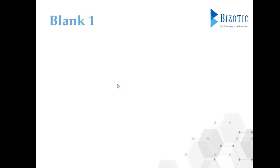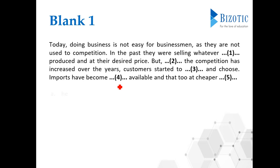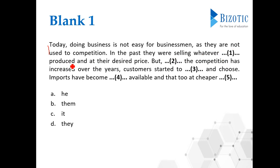Let's see the options available for the first blank. Let's read these two lines again to understand which option will directly fit into the first blank. 'Today doing business is not easy for businessmen as they are not used to competition. In the past they were selling whatever dash produced.' The options are: he, then, it, they. Here we are talking about businessmen and in the previous note they have just mentioned 'they.'